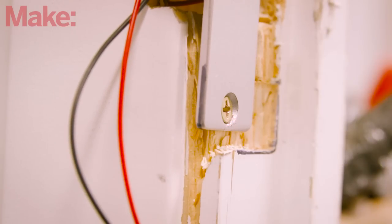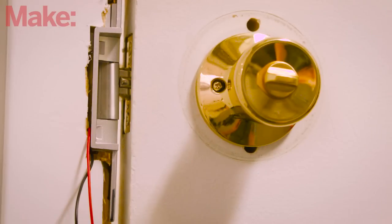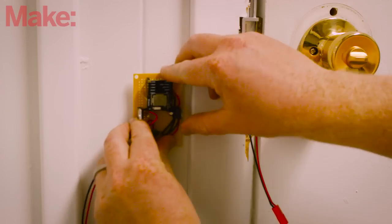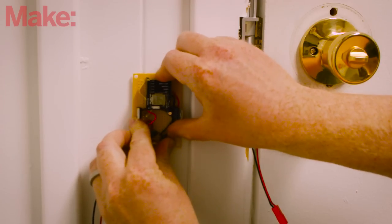Install the door strike using two screws, being mindful as to how the wires are run. Finally, mount the RF-duino to the door frame. You can use a project enclosure if you want to keep things tidy.